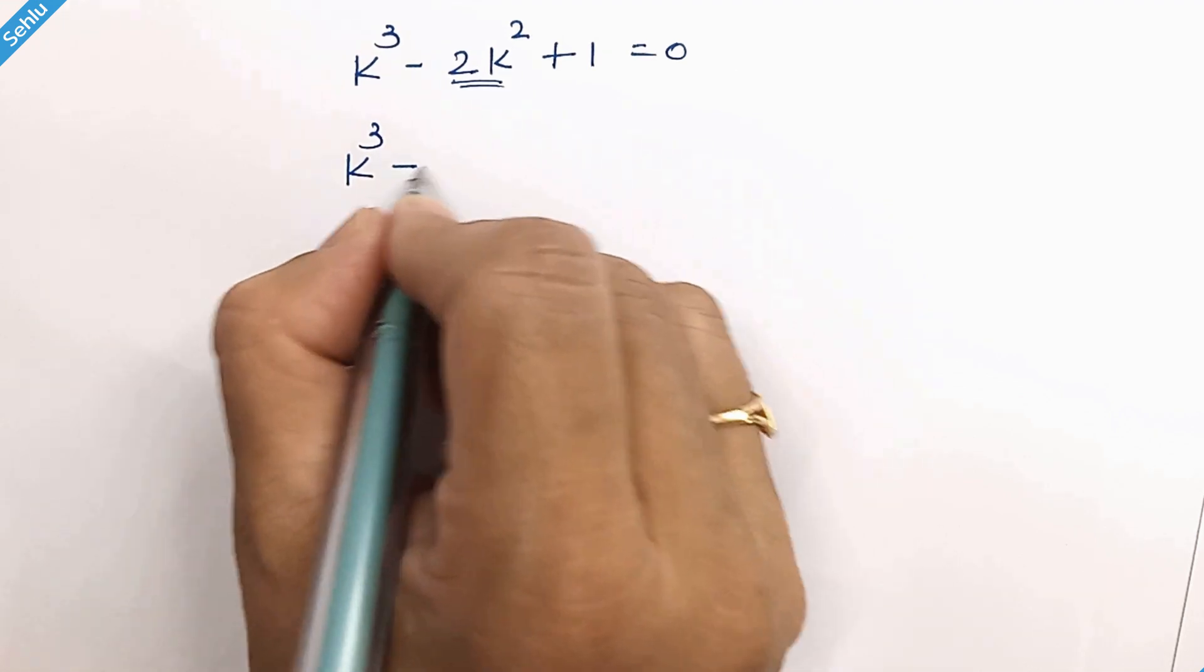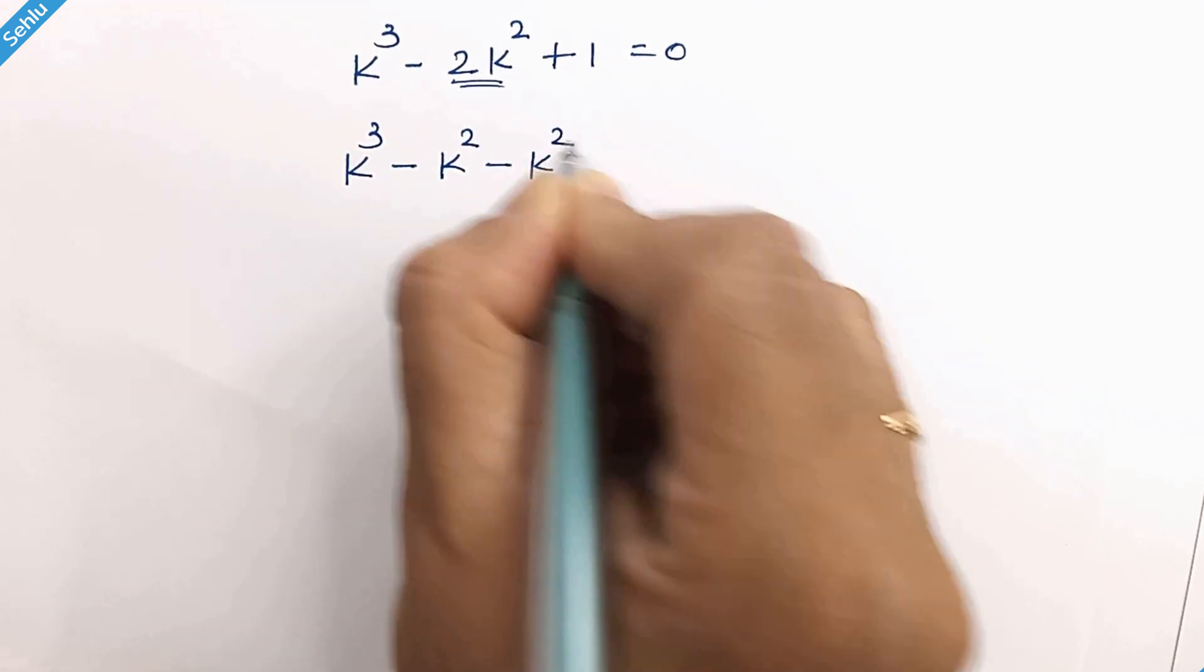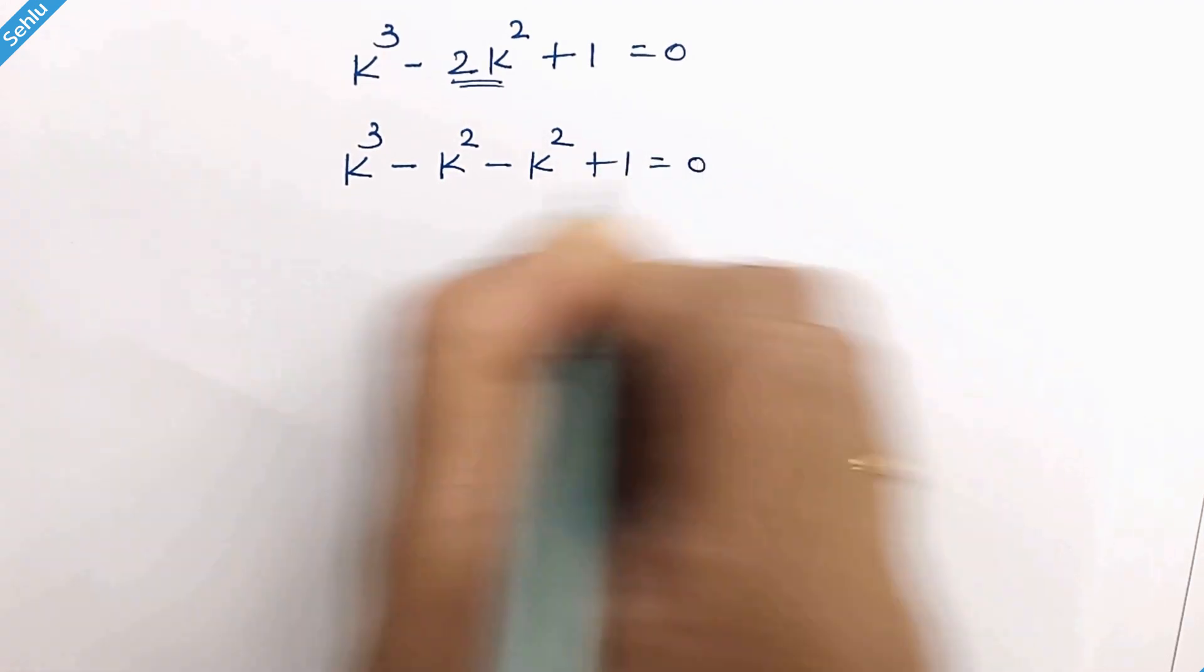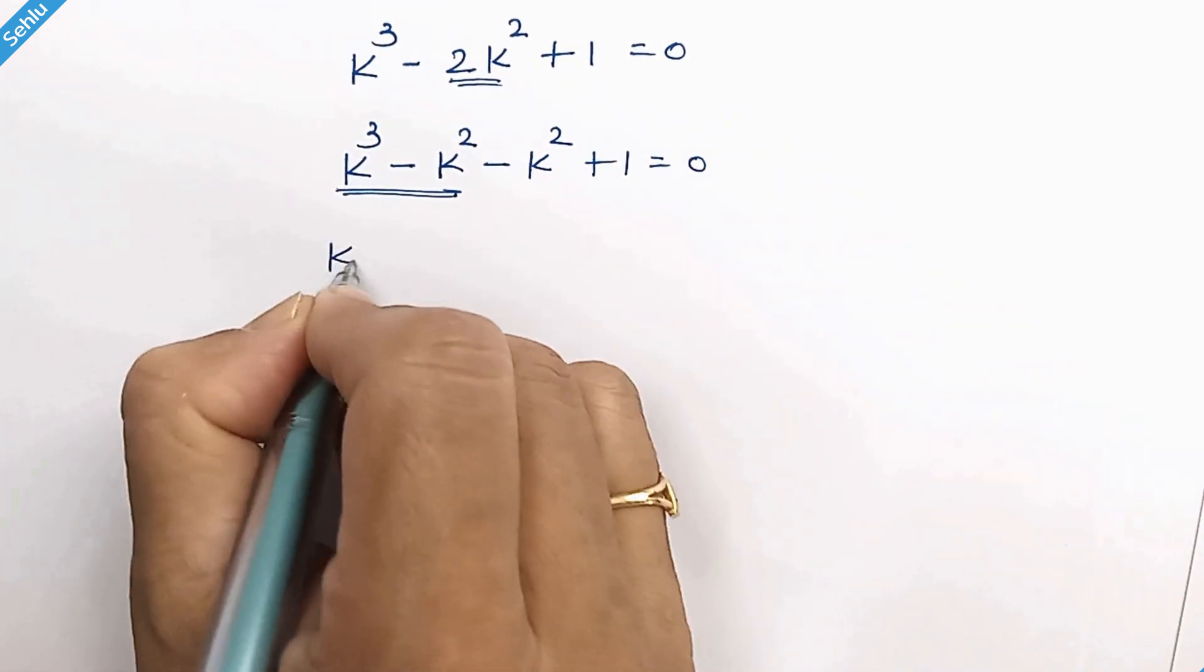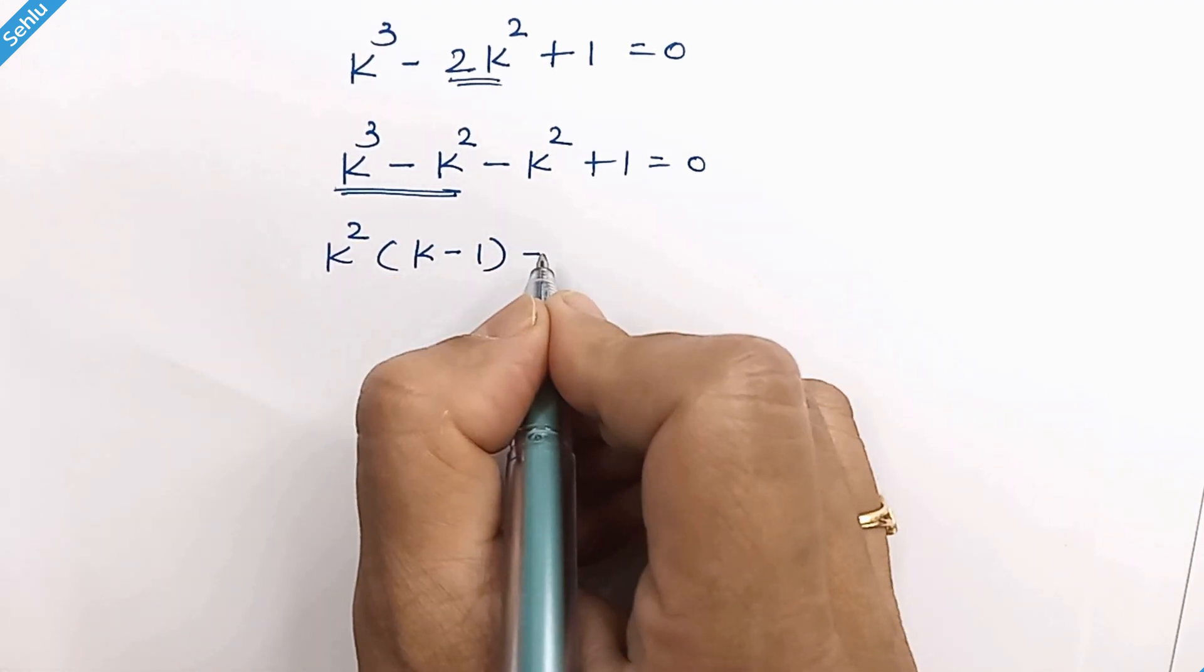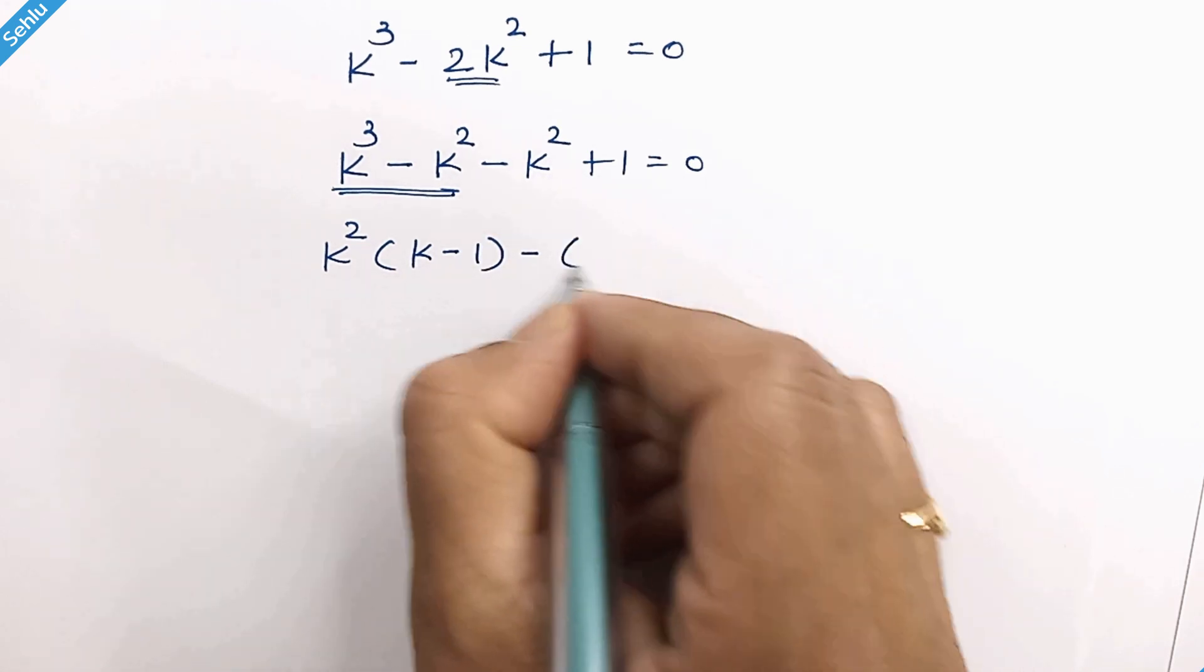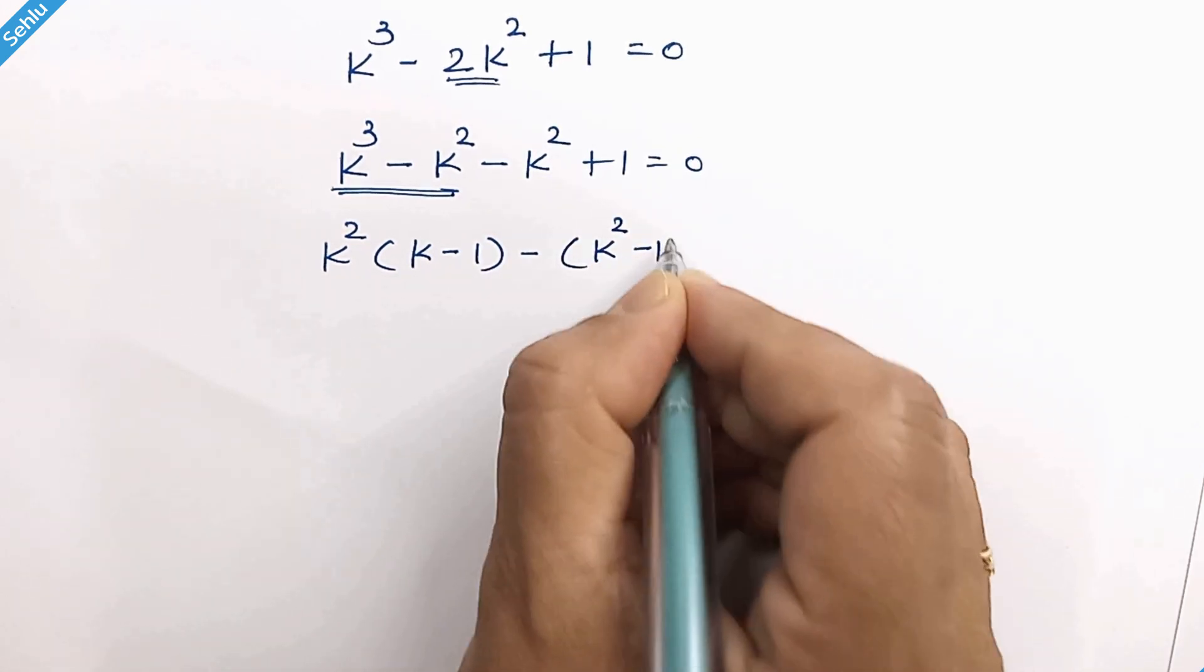This can be written as k cube minus k square minus k square plus 1. Taking k square common, now we can put this in bracket so it will be k square minus 1.